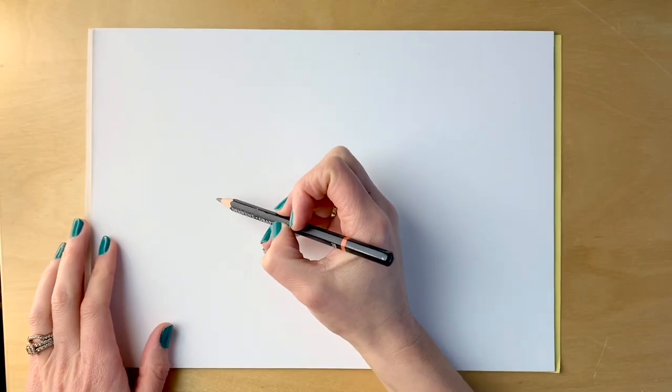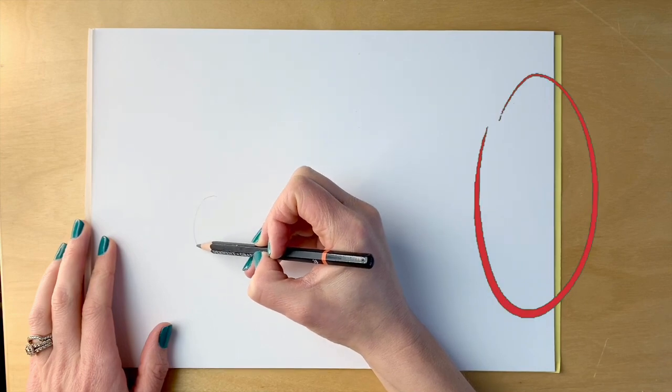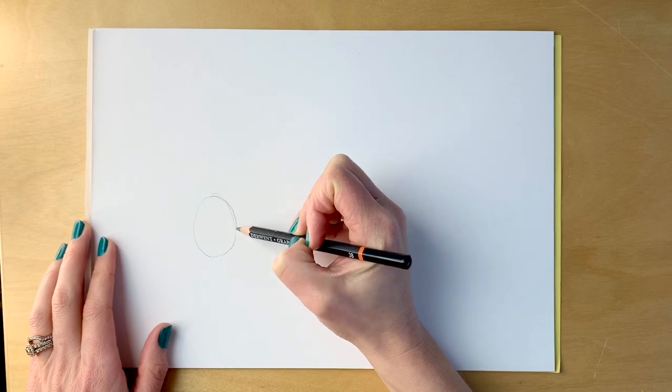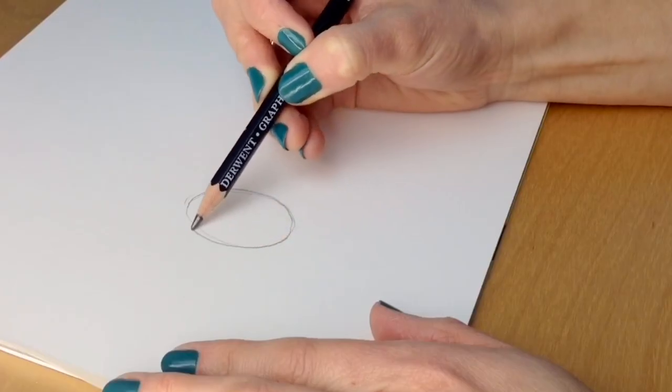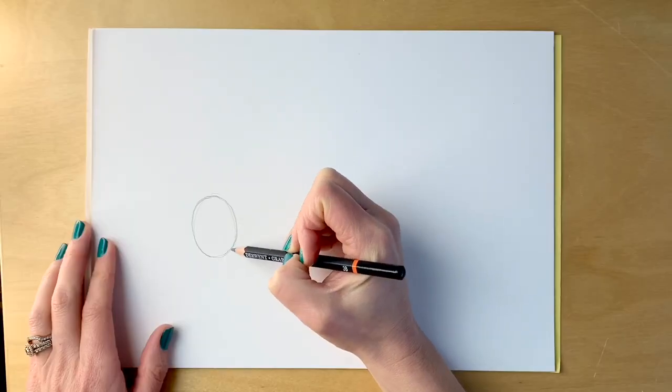I'm going to start off with the narwhal's head, and this is just going to be a simple little oval shape just down here. Doesn't have to be perfect. I'm just doing it lightly in pencil because we're going to erase all this later on.